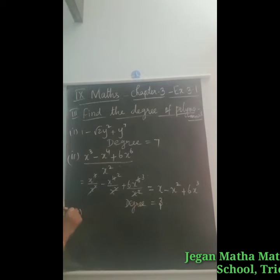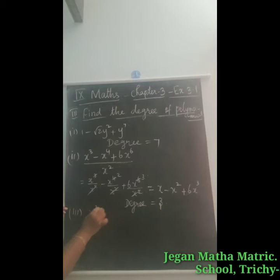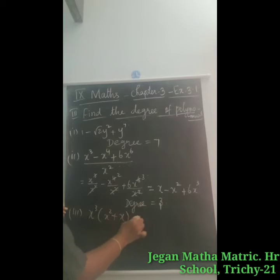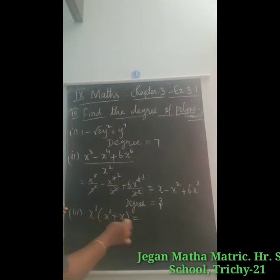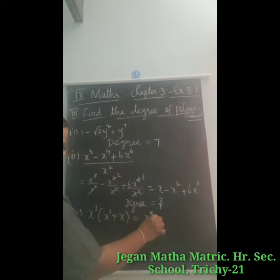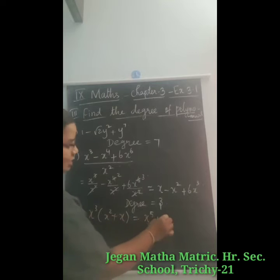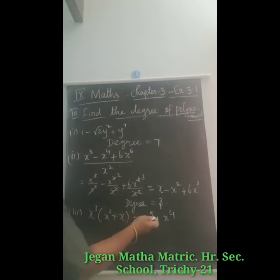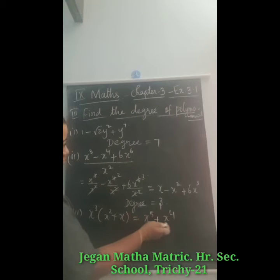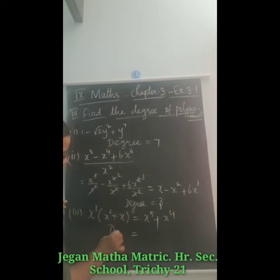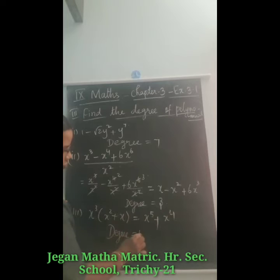Third question: x cubed into x squared plus x. We multiply: x cubed into x squared gives x power 5, and x cubed into x gives x power 4. The highest power among these two terms is 5, so the degree is equal to 5.